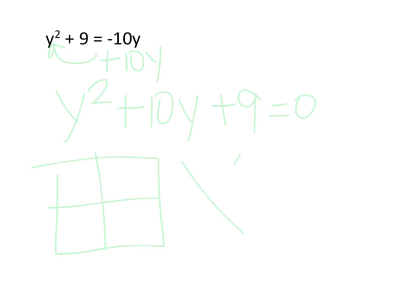My first term goes in the upper left hand box. My last term goes in my bottom box, so I'm going to find numbers that multiply to 9 that add or subtract to 10. So let's try 9 and 1.